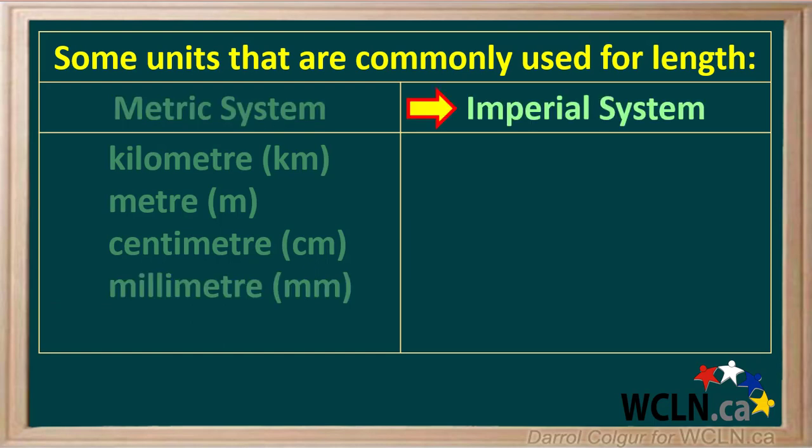Now we'll look at the imperial system, which originated in Great Britain. It is still the main measurement system used in the United States. Although the metric system is the official system in Canada, the imperial system is also used to a limited extent here, so it helps us to be familiar with it.